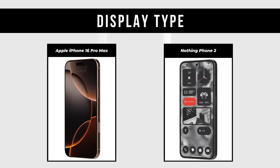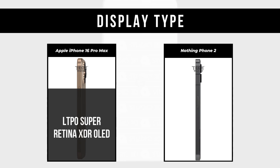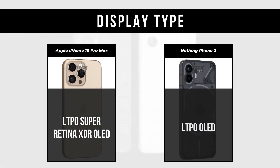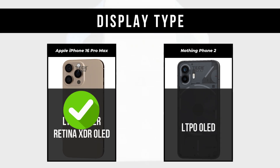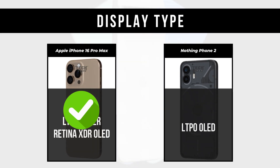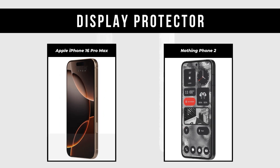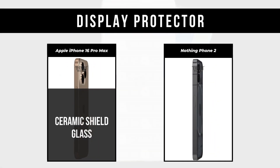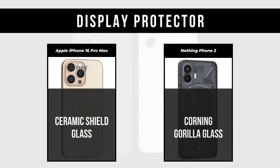Display Type: Apple iPhone 16 Pro Max is LTPO Super Retina XDR OLED; Nothing Phone 2 is LTPO OLED. Display Protector: Apple iPhone 16 Pro Max is Ceramic Shield Glass; Nothing Phone 2 is Corning Gorilla Glass.